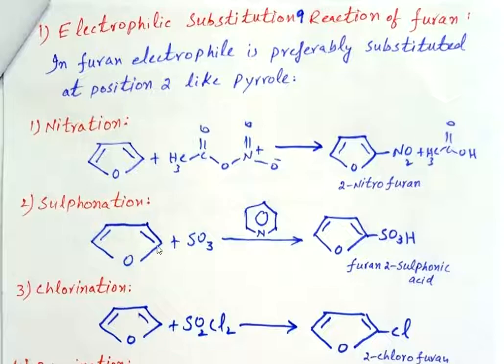The next reaction is sulfonation of furan. In sulfonation, sulfur trioxide SO3 is treated with furan in the presence of pyridine. As a result, we get furan-2-sulfonic acid, so the sulfonic acid group is introduced at position 2 of furan.